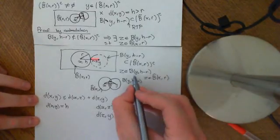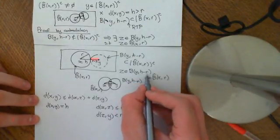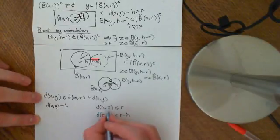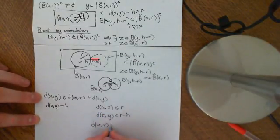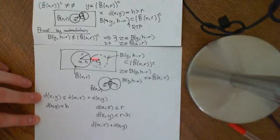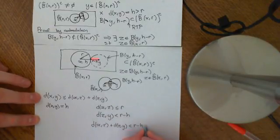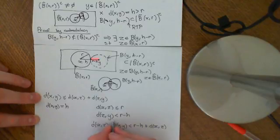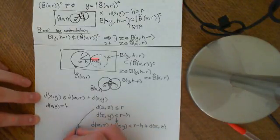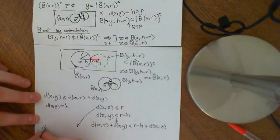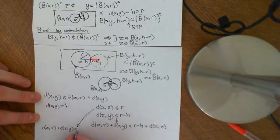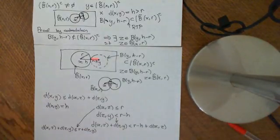The reason being that Z is an element of the open ball centered at Y of radius H minus R. What we can now do is combine these two inequalities together. Adding onto both sides, we get that d(X, Z) plus d(Z, Y) is less than or equal to R plus d(Z, Y), and continuing to combine them rigorously to reach the contradiction.